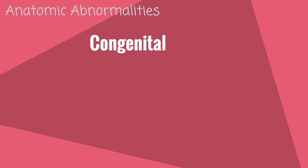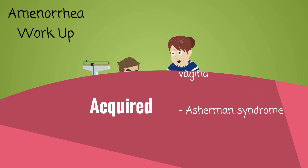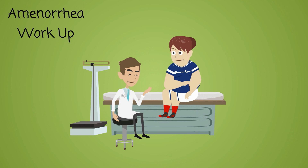Anatomic abnormalities causing amenorrhea can be congenital or acquired. Common congenital causes include imperforate hymen or absence of the uterus or vagina. Asherman syndrome is the most common cause of secondary amenorrhea. This can occur after dilation and curettage, especially for retained products of conception in the setting of infection, causing scarring of the endometrium.